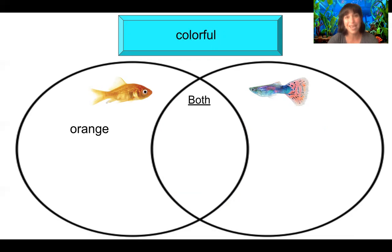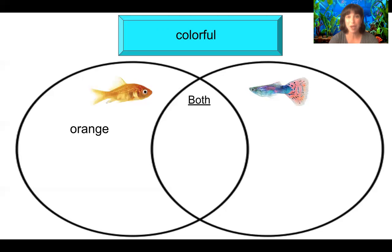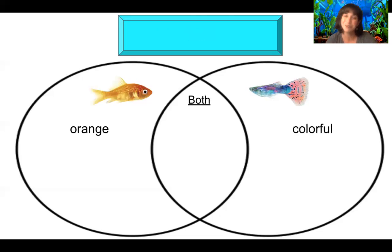Let's take a look at our next word: colorful. Can you say colorful? Let's clap it and count the syllables. Colorful — three syllables. Show me with your pointer power finger. Where should we put the word colorful? If you said colorful should go with guppy, you're right. Guppies, especially male guppies, are very colorful fish.